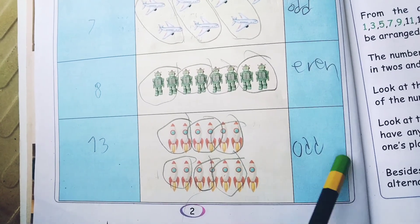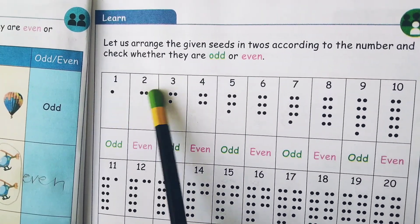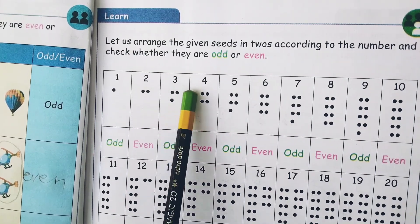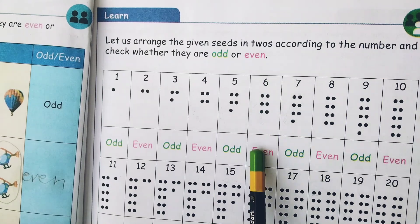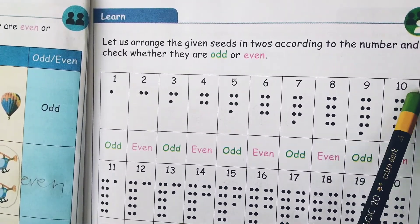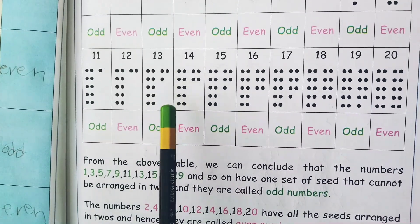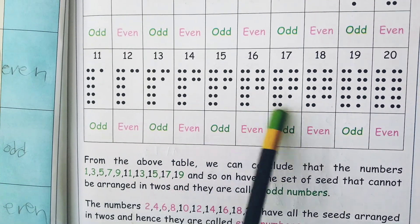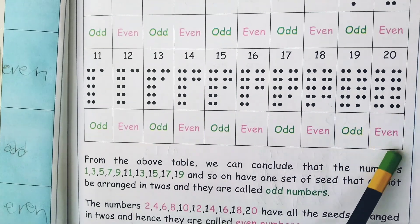Let us arrange the given seeds in 2s according to the number and check whether they are odd or even. 1 is odd, 2 is even, 3 is odd, 4 is even, 5 is odd, 6 is even, 7 is odd, 8 is even, 9 is odd, 10 is even, 11 is odd, 12 is even, 13 is odd, 14 is even, 15 is odd, 16 is even, 17 is odd, 18 is even, 19 is odd, 20 is even.